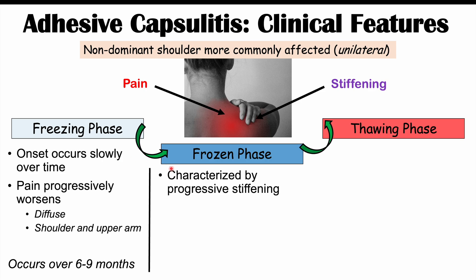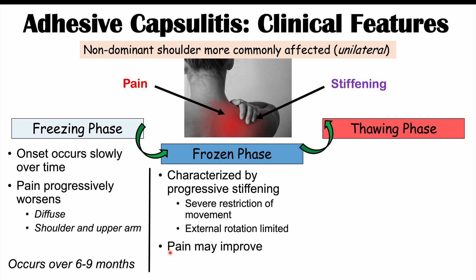In the frozen phase, there is progressive stiffening. This corresponds to the pathophysiology where inflammation starts to reduce but leads to fibrosis of the joint capsule, making it harder to move and severely restricting movement. External rotation is especially limited. Because this phase corresponds to reduced inflammation, pain can actually improve, and this phase occurs over four to 20 months.